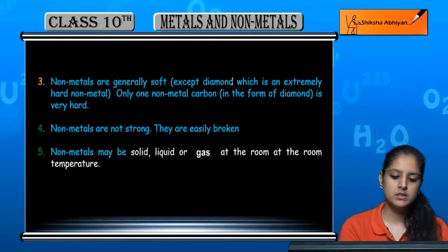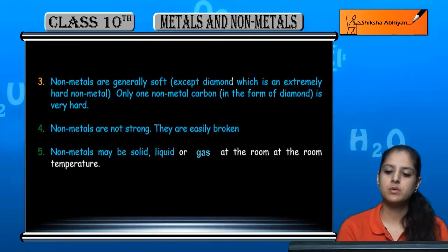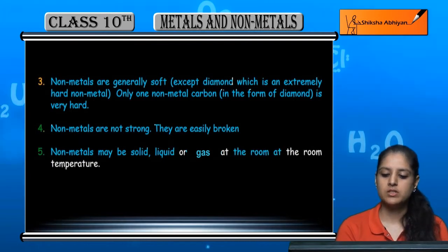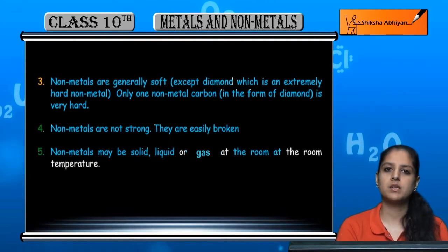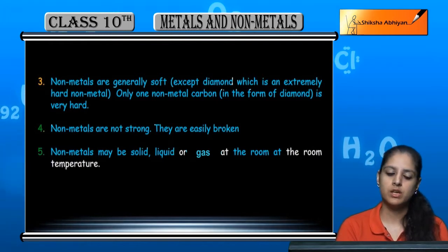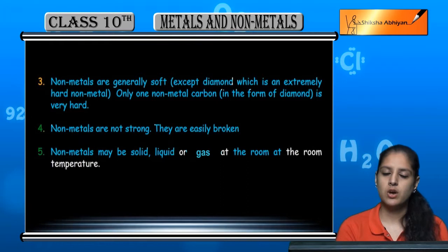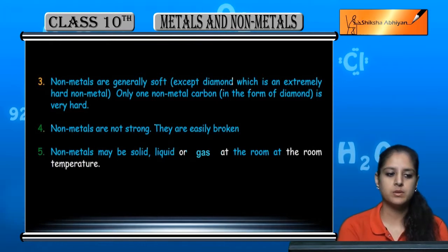Non-metals can be solid, liquid, or gas at room temperature. When we talk about metals, they are solid — with only mercury as an exception. But with non-metals, you will find three varieties: solids, liquids, and gases.